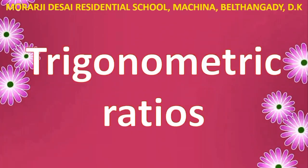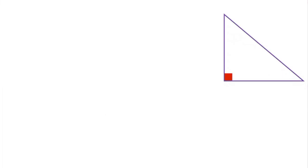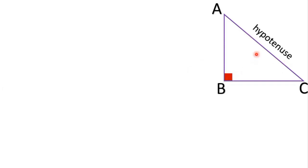In this video you are going to learn about trigonometric ratios. Consider a right triangle ABC which is right angled at B, and the remaining angles are A and C. AC is called the hypotenuse, which is the side opposite to the right angle.